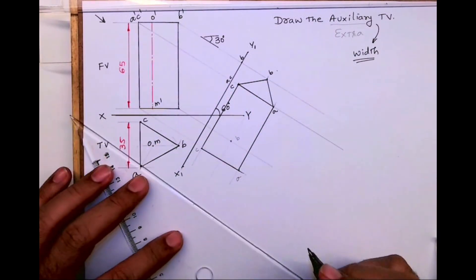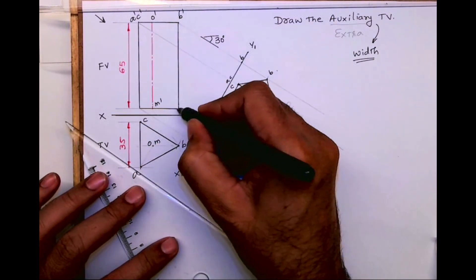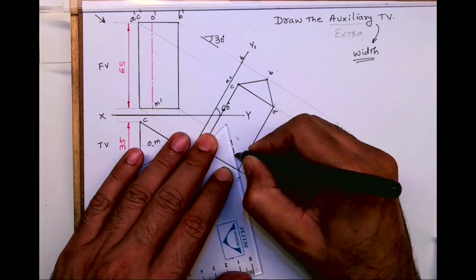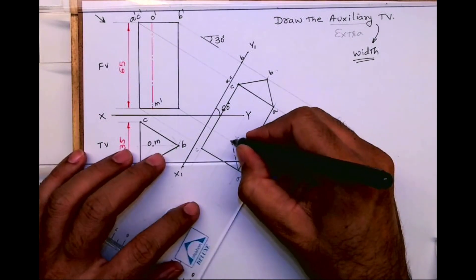Always remember, observer is very important. So in this case, A and C is nearer to the observer, and this point B is away from observer. So whatever is passing through point B is dotted.